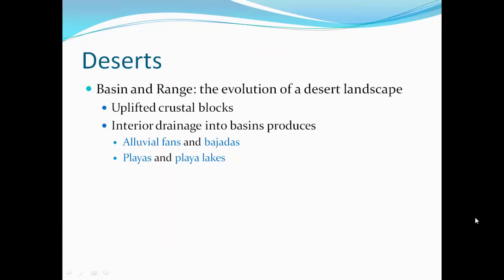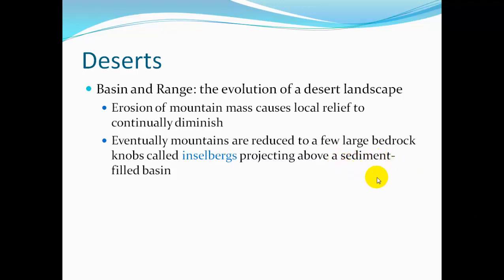The Basin and Range region in western United States has a desert landscape with mountains and valleys, with uplifted crustal blocks. Between these blocks are interior valleys with interior drainage that drains into the basins, producing alluvial fans — kind of like land-bound deltas — and bajadas, playas, and playa lakes. Erosion of the mountain mass causes local relief to slowly be reduced until the land gets flattened. Eventually the mountains are reduced to a few large bedrock knobs called inselbergs, projecting above the sediment-filled basin.